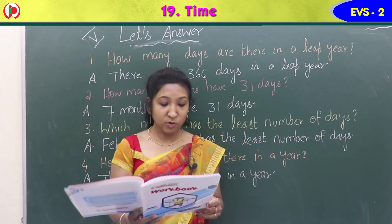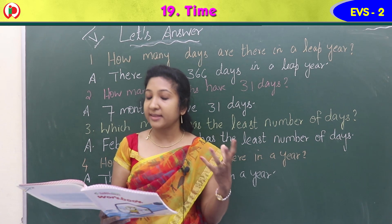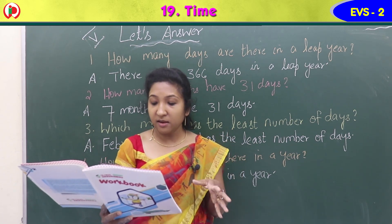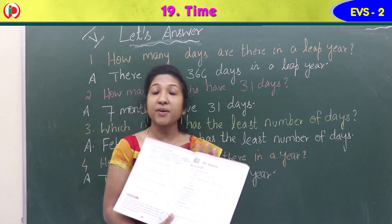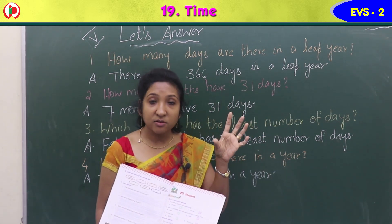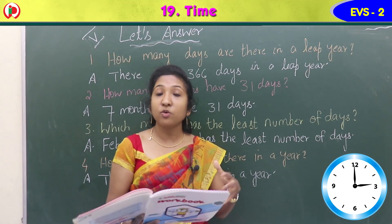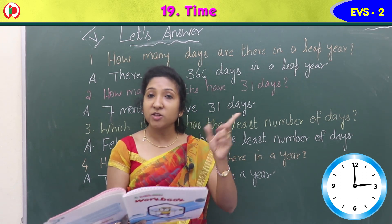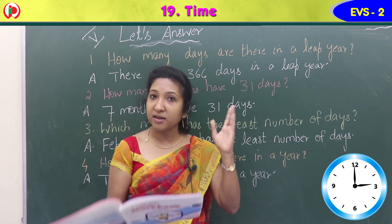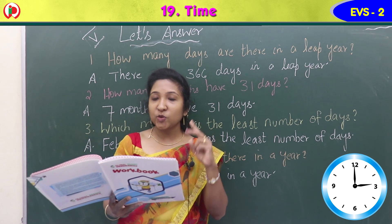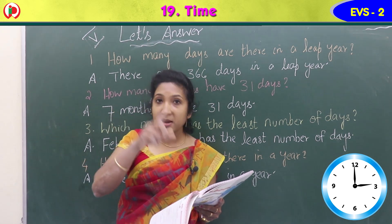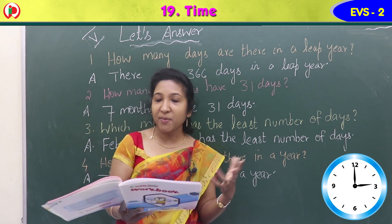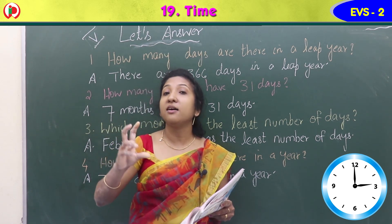Next is a hands-on activity on page 40 of your workbook. Take a cardboard, cut it into a circle with the help of your parents, and write numbers on it as shown in the image of a clock. Then attach two sticks to it — one for the minute hand and one for the hour hand. Move both hands to tell the time at different points.